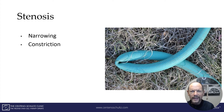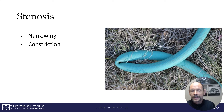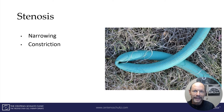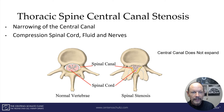So what is stenosis? Stenosis in the simplest of terms is narrowing, otherwise known as constriction — sort of like a kink in a hose depicted here. A kink in the hose doesn't work, and certainly a kink in the spinal cord and spine doesn't work either. So thoracic spine central canal stenosis is narrowing of the central canal in the thoracic spine.